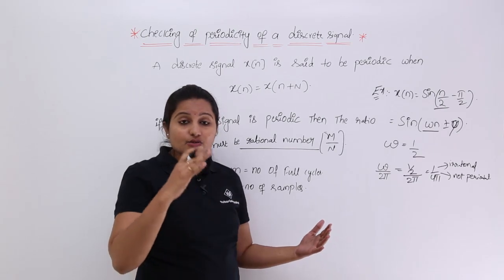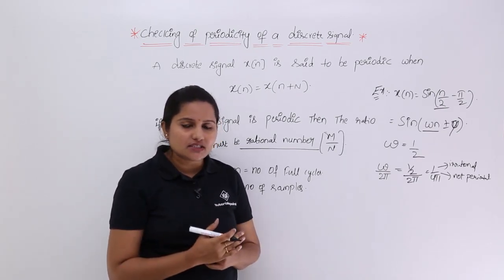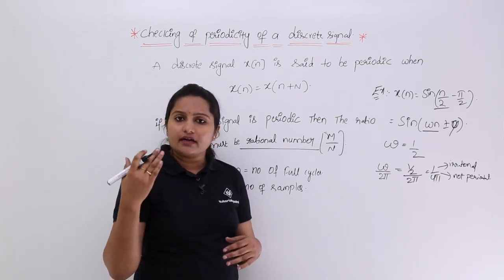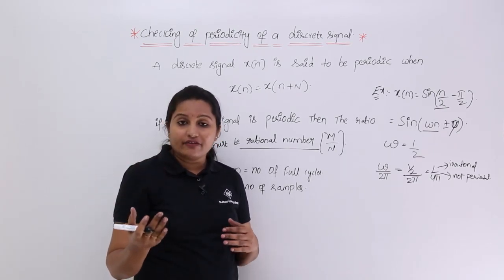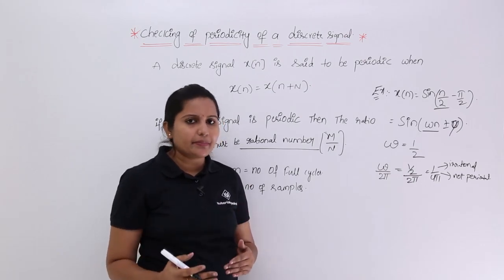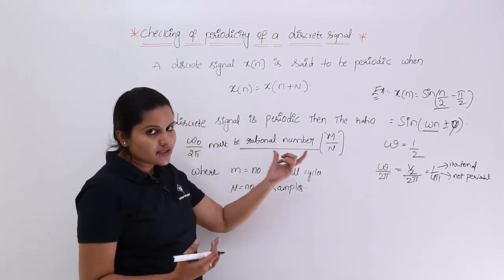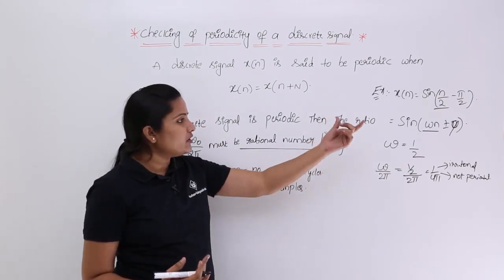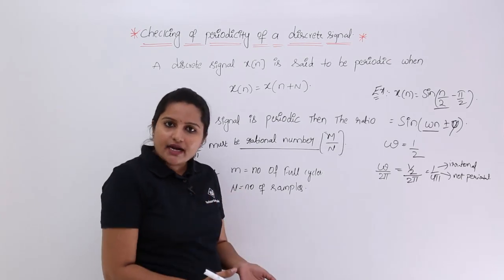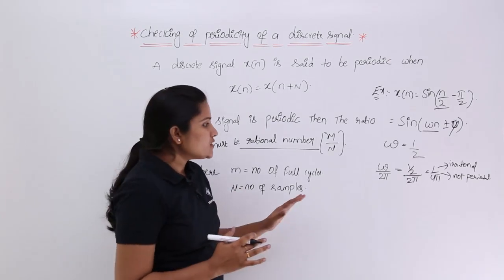For discrete signals, do not apply the GCD concept or the T1/T2 ratio of time periods method. You must apply the ω₀/2π rational number method to check the periodicity of a discrete signal.